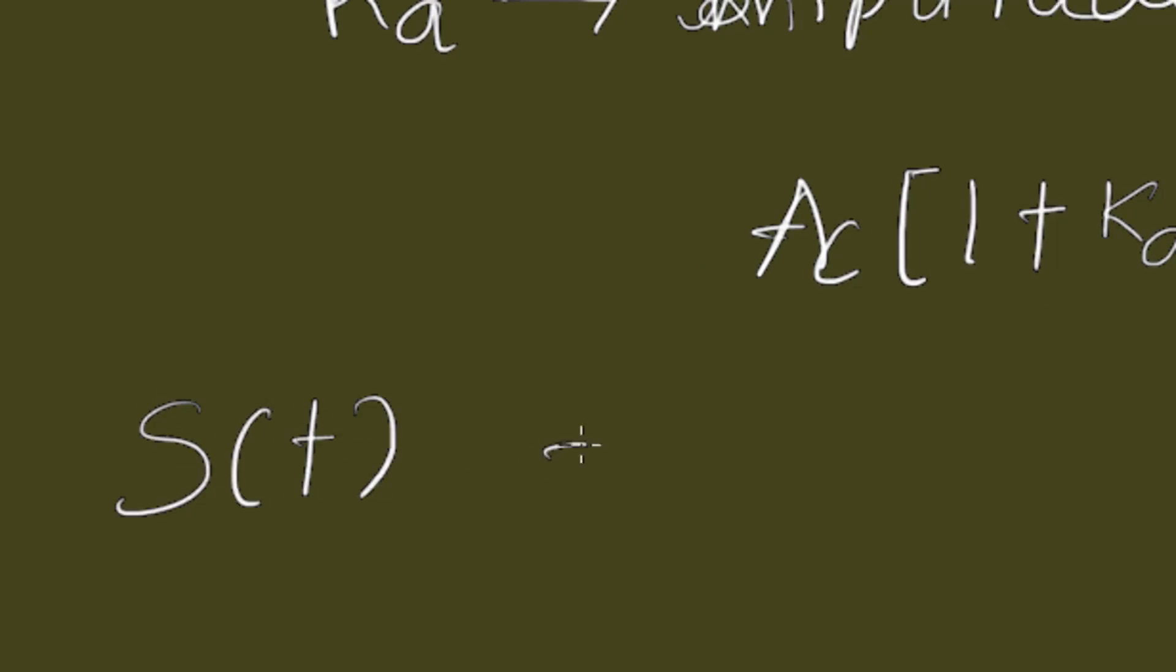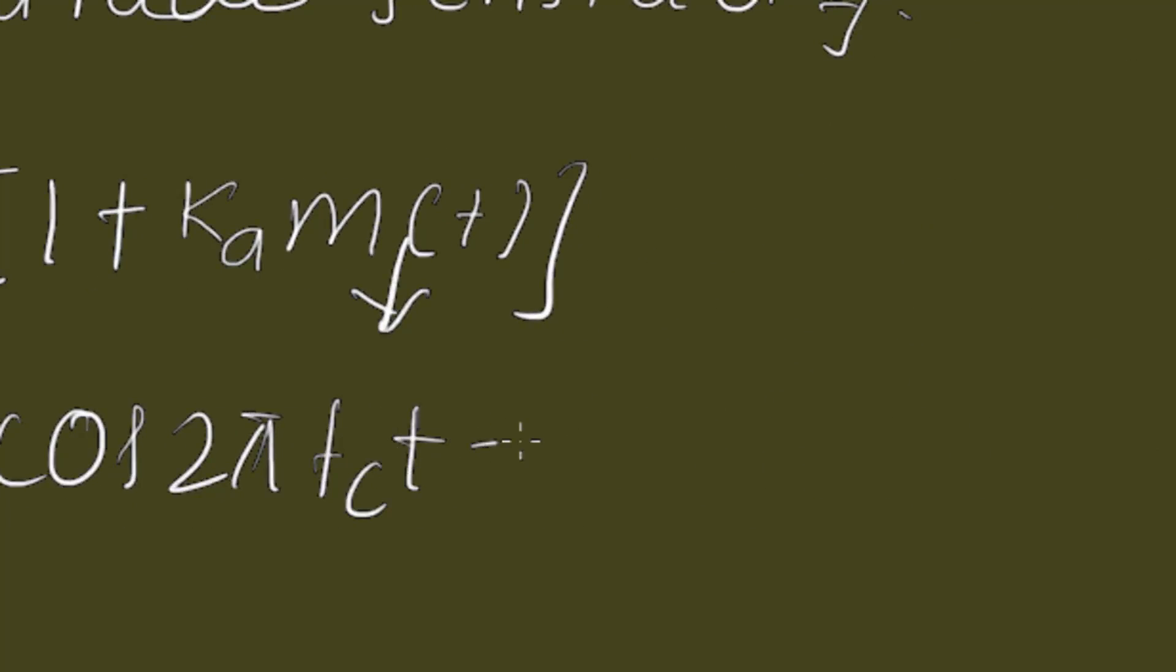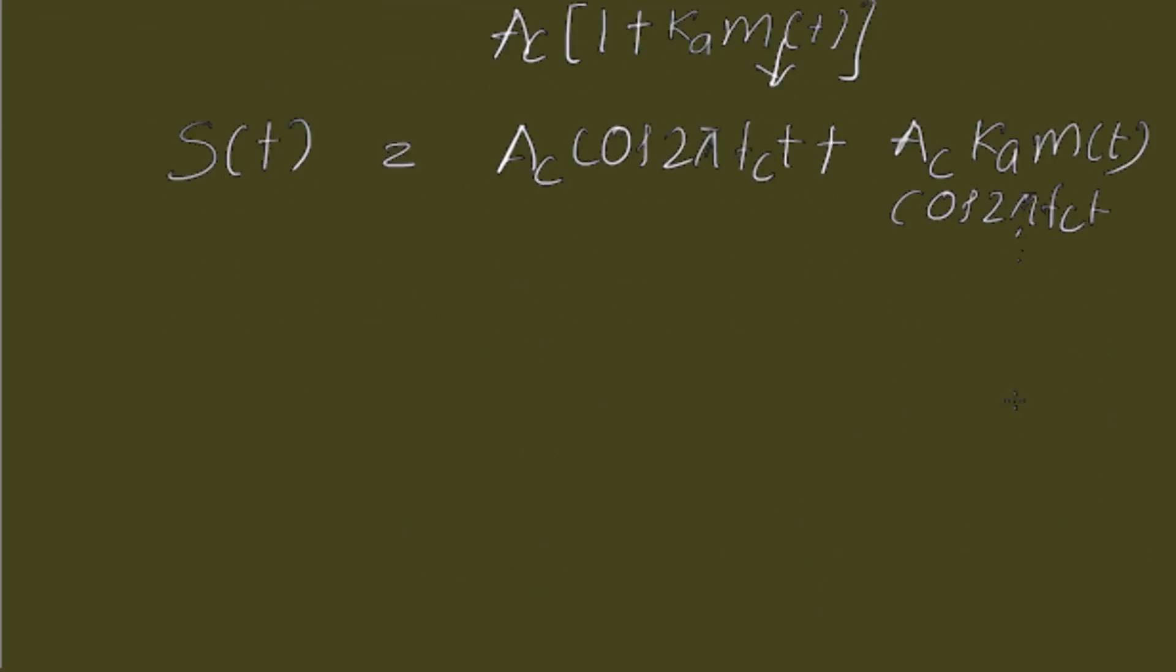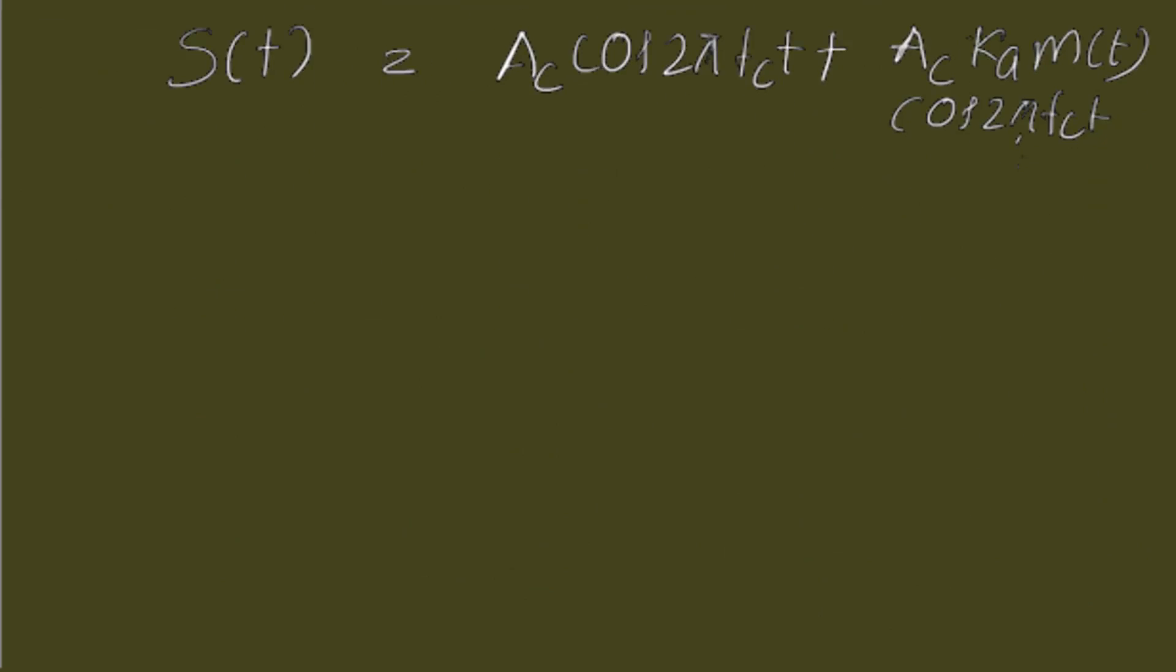And if we expand this expression we get Ac cos 2πfct plus Ac KA M(t) into cos 2πfct. This expression earlier we have considered, this is nothing but the DSP signal. And if we add the carrier to the DSP signal, it will become amplitude modulation. The purpose of adding this carrier is to ease the demodulation of the wave.